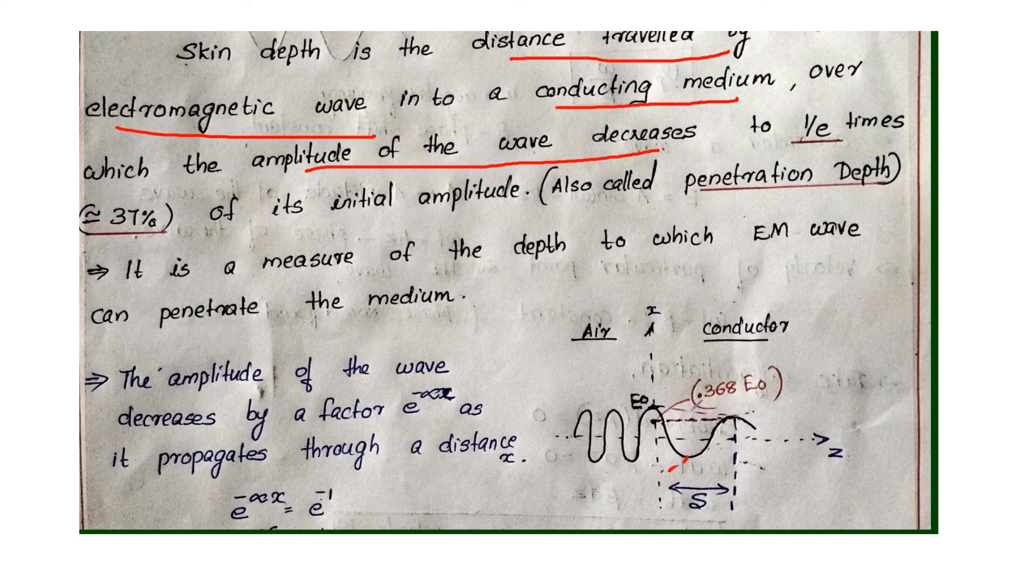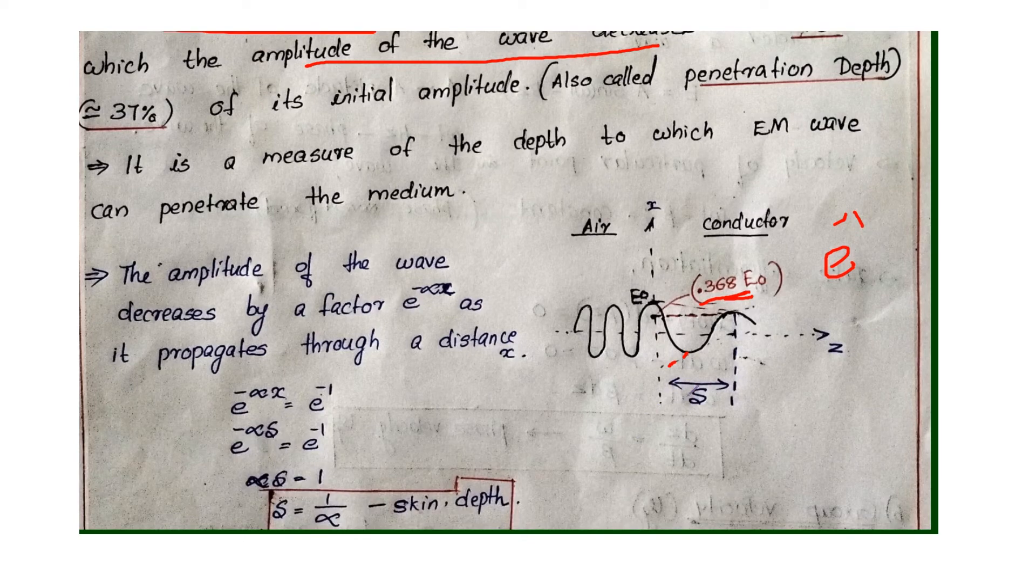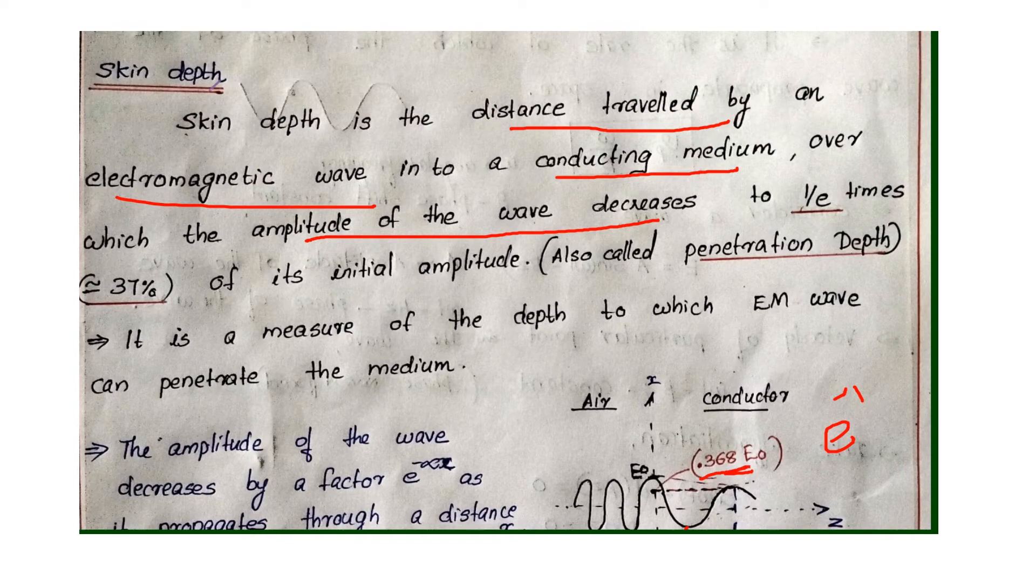Now let's look at how the amplitude decreases. When it decreases, the amplitude is 1 by e times, e raised to minus 1 times. E raised to minus 1 value is 0.368, nearly 37 percent. This is the distance. This distance is the skin depth, the depth of penetration.